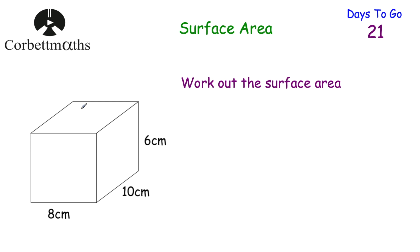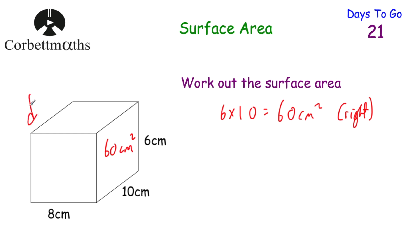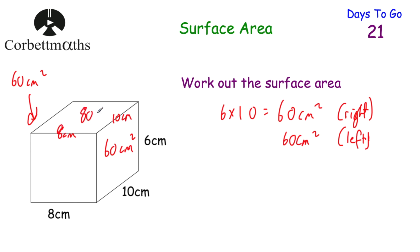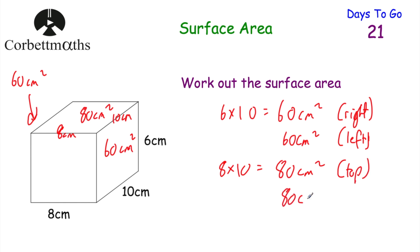Now let's have a look at one for you to try. Here we've got a cuboid — can you work out the total surface area? Press pause now and work out the total surface area. To work it out, let's find the area of all six faces. Starting with the right hand side: 6 centimetres times 10 centimetres, so 6 × 10 = 60 centimetres squared. That's the right hand side, and it's the same as the left hand side — also 60 centimetres squared. Now let's have a look at the top: 8 centimetres and 10 centimetres, so 8 × 10 = 80 centimetres squared for the top and the same for the bottom.